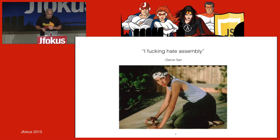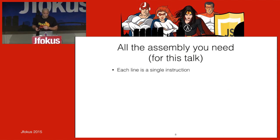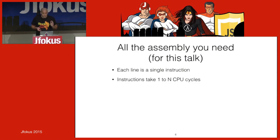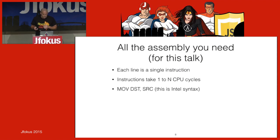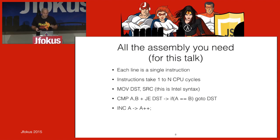We're going to have to look at some assembly — but this is all you need for this talk. Every line of assembly is a single instruction and every instruction takes one or more CPU cycles. We'll look a lot at 'move' because that's what object-oriented programs do. We'll also see 'if' — a comparison followed by a conditional jump — and 'increment'. That's all the assembly we're going to see.